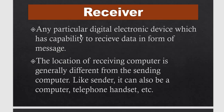Receiver کے بارے میں ایک اہم بات یہ ہے کہ receiving computer کی location عموماً sending computer سے مختلف ہوتی ہے۔ Sender کی طرح receiver بھی computer، telephone، یا handset ہو سکتا ہے۔ مثلاً اگر میں WhatsApp پر message send کر رہا ہوں تو receiver کے پاس بھی WhatsApp کا ہونا ضروری ہے — یعنی وہی protocol ہونا چاہیے۔ اگر وہ app نہ ہو تو message نہیں مل سکتا، اس لیے sender اور receiver دونوں کا protocol ایک جیسا ہونا چاہیے۔